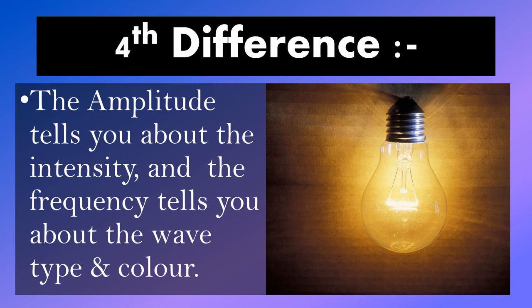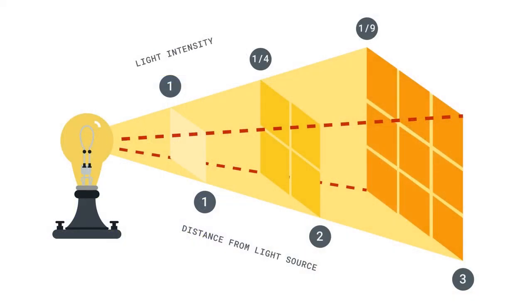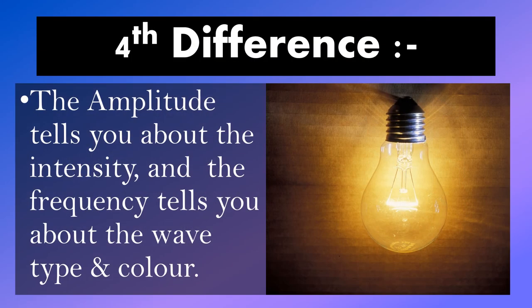Another difference between light waves and sound waves is the use and meaning of the terms amplitude and frequency. In light waves, the amplitude tells you about the intensity of the light, and the frequency tells you about the wave type and the color.